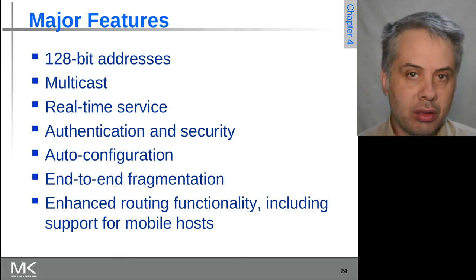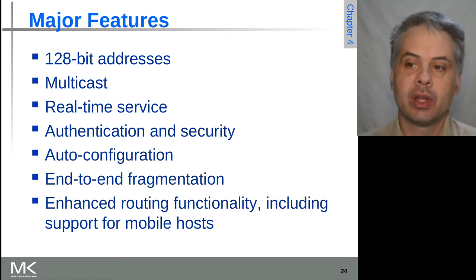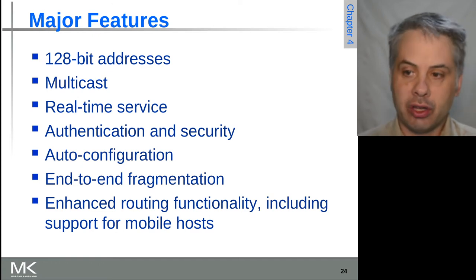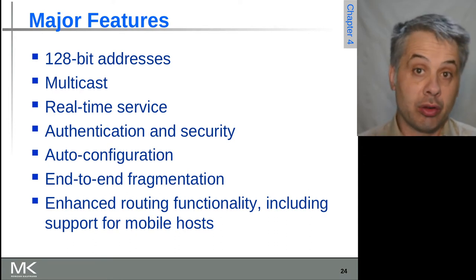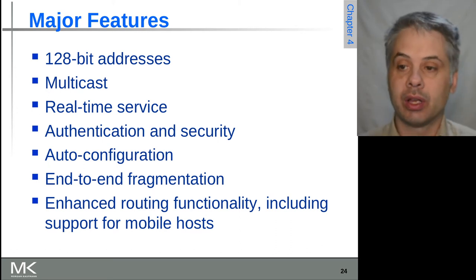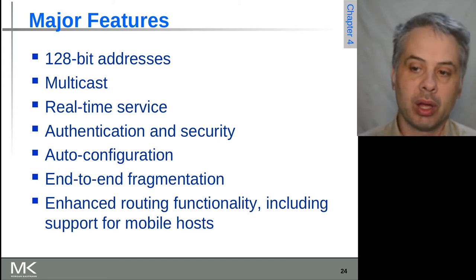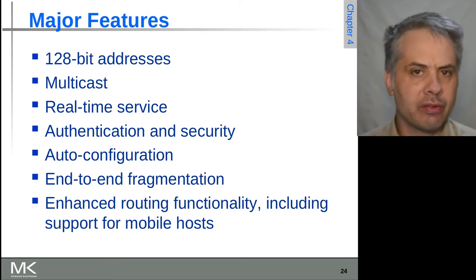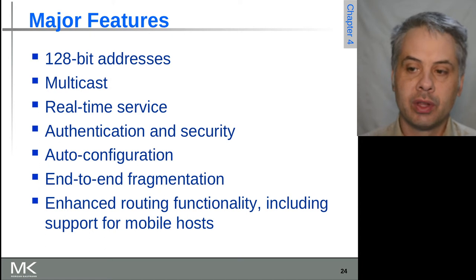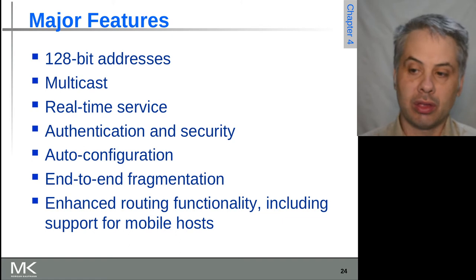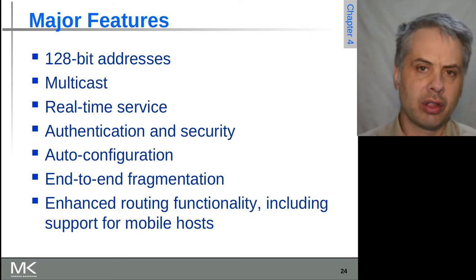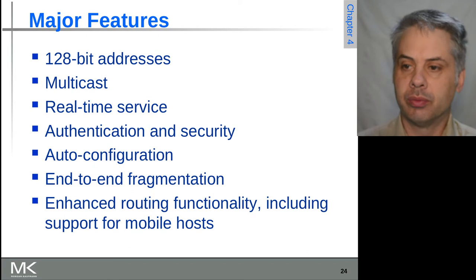IPv6's handling of multicast is quite a bit more advanced than in IPv4, and it has features to support real-time service — flow labels and the like that can improve routing speed. Authentication security: IPsec is effectively baked into IPv6. It improves auto-configuration compared to IPv4, so we don't need DHCP or BootP for address provisioning. Fragmentation is simplified — it can only be fragmented end-to-end, not part-way through on any given hop. And it has advanced functionality around routing to support both global scale and mobile nodes.